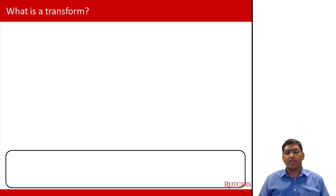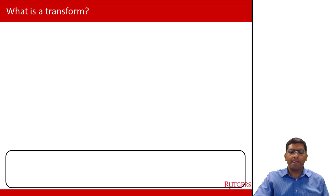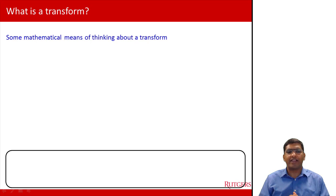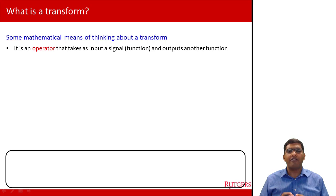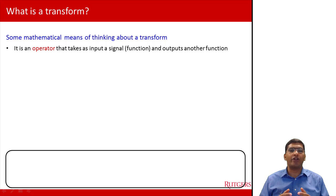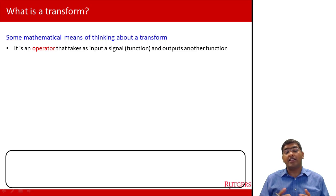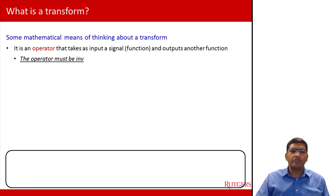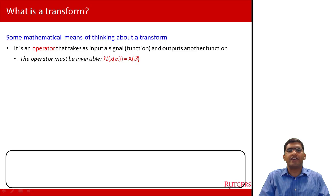Let's begin by answering: what is a transform? We won't go into deep mathematical aspects, but there are three different ways of thinking about a transform from the mathematical perspective. The first is a very abstract mathematical notion which says that a transform is nothing but an operator that takes as input a signal — a function — and outputs another function, where the output function could have a different variable than the original function.